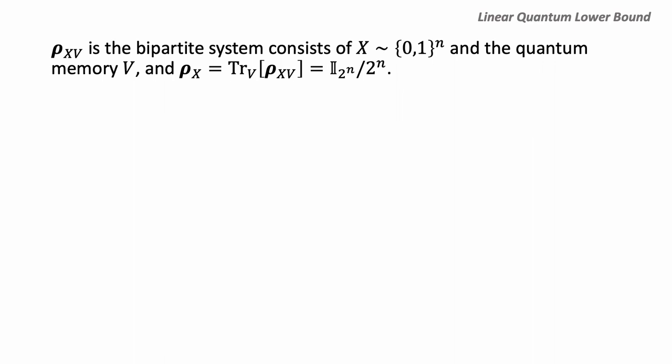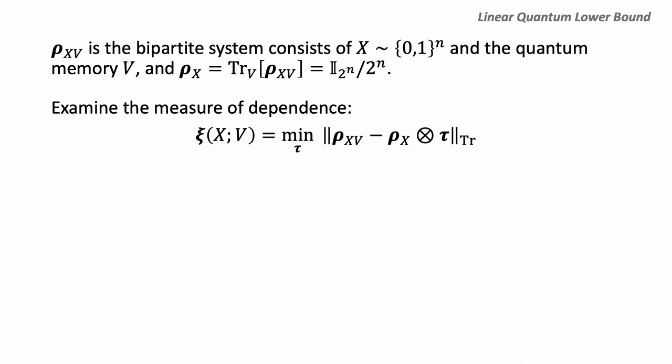We define the measure of dependence as the minimum distance between the joint system rho_{X,V} — the state of our learning algorithm and the target secret — and another system where x and v are completely independent, denoted by rho_X tensored with tau for some tau. If this distance is small, it means the learning algorithm is very close to learning almost nothing about x, because the state of the learning algorithm is completely independent of x.